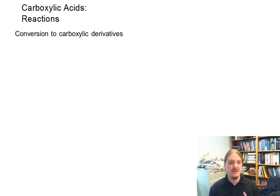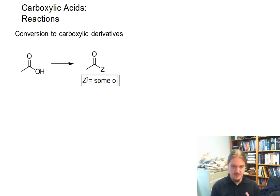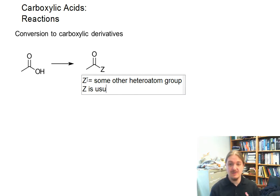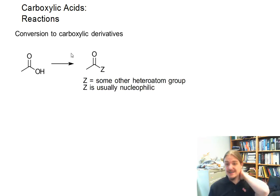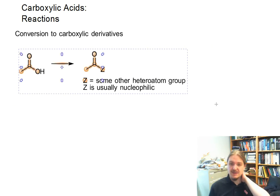What is a carboxylic acid derivative? A carboxylic acid derivative is some molecule where the OH in the carboxylic acid has been replaced by some other functional group, Z, some other usually heteroatom group. Z is usually nucleophilic. So the types of reactions that are used to convert carboxylic acids into these derivatives are often nucleophilic substitution reactions.